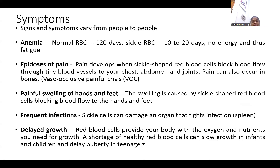Another symptom is delayed growth. Red blood cells provide oxygen and nutrients necessary for growth, so a shortage of healthy RBCs results in delayed growth in infants and children, and delayed puberty in teenagers.